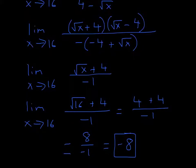So now you're left with square root of x plus 4 over negative 1. Remember that this negative sign, just because these two cancel, doesn't mean this negative 1 goes away. The negative 1 is invisible, but it stays there. And now, since you've canceled something out, you can try substitution again.